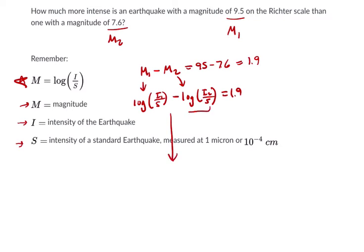And here, let me write this down. What is this? Laws of logarithm says that that's the same thing as the log of I sub 1 over S divided by I sub 2 over S. And if we divide by a fraction, we keep change flip, right? Take the first fraction, multiply by the reciprocal of the second,